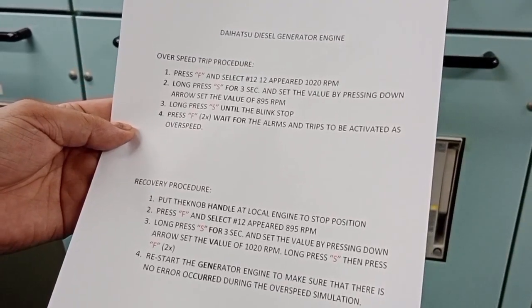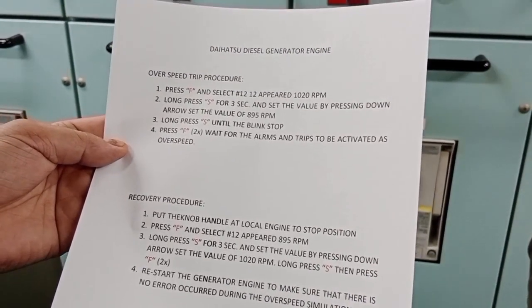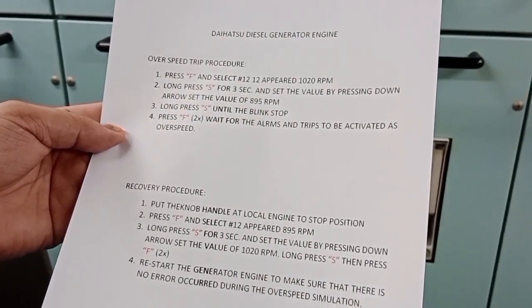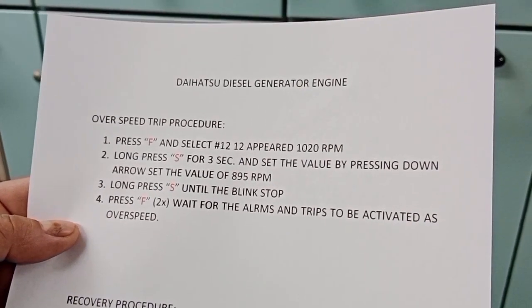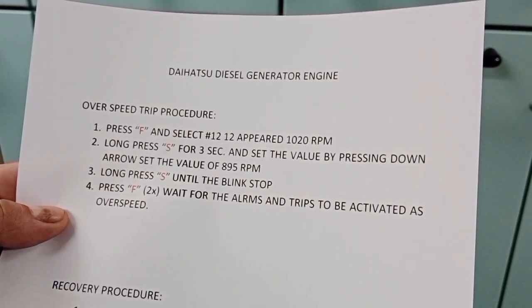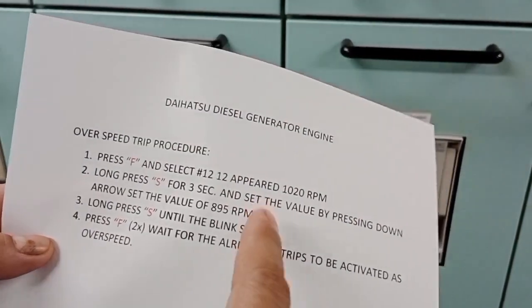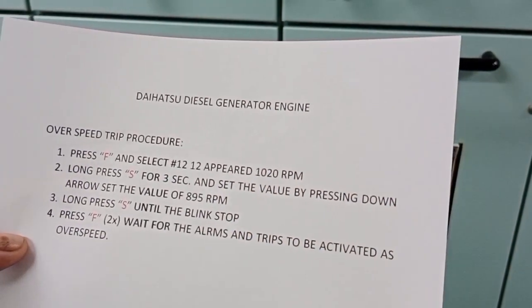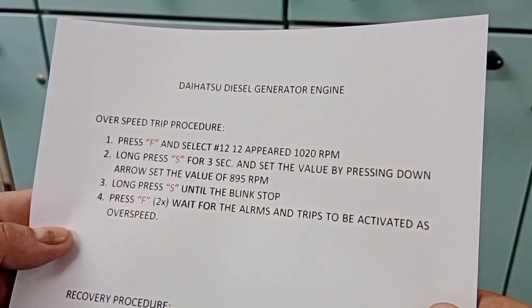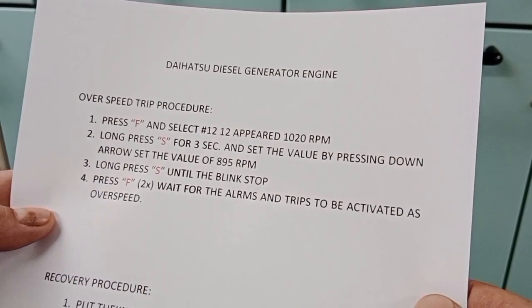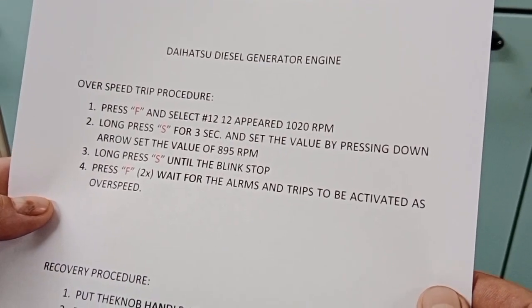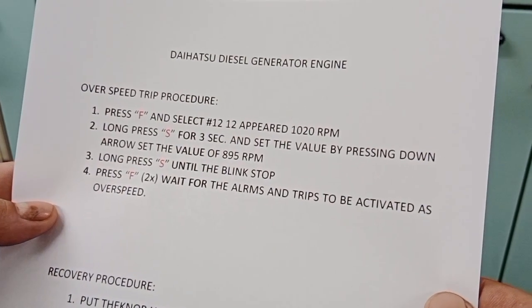Next, we are conducting the overspeed test of the generator engine. This is the procedure: number one, press F, unselect number 12, set to 1020 RPM. Number two, long press F for 3 seconds, unset the value by pressing down arrows to set the value of 895 RPM. Number three, long press F until the blinking stops. Number four, press F two times and wait for the alarms and trip to activate as overspeed.